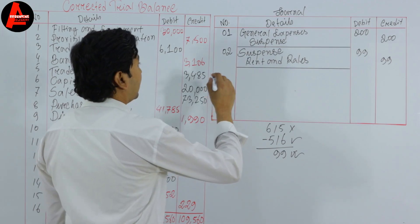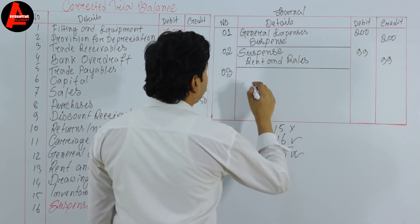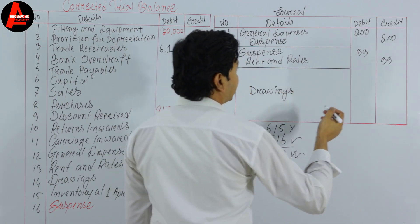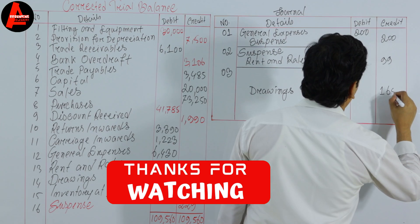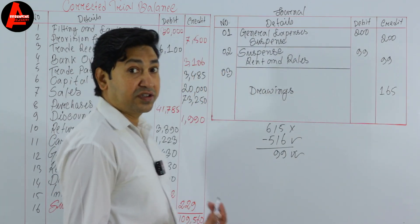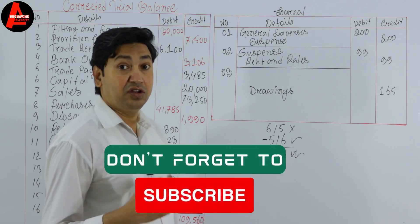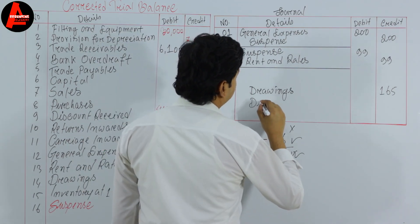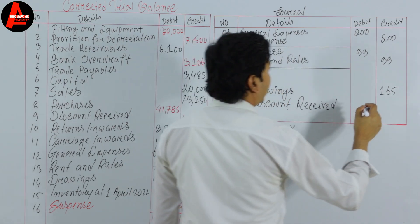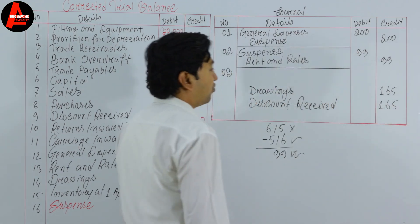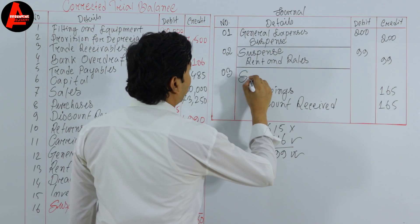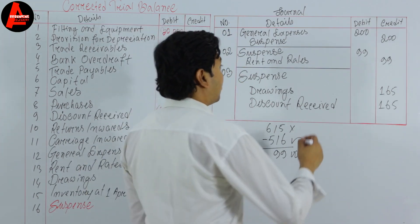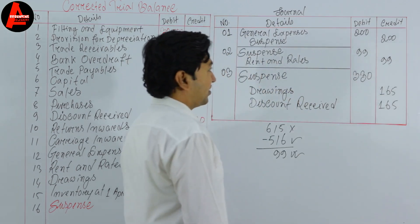Number three journal entry: drawings to be credited because mistakenly it was debited, so on the credit side we write drawings $165. And discount received — since it is an income account and a credit account — we write discount received on the credit side, also $165. The debit account is suspense, which is double: $165 plus $165 equals $330.